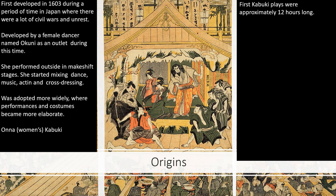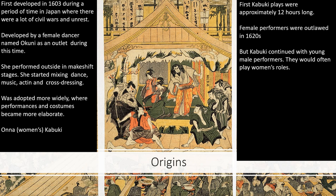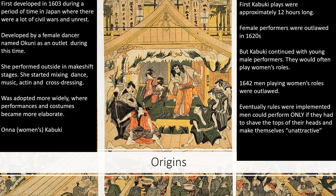Different from some of the theater forms we've been exploring, the first kabuki plays were about 12 hours long — not only as an art form but also as a form of escapism. The female performers were outlawed in the 1620s. It continued with young male performers, but eventually men playing women's roles was also outlawed in 1642. Rules were then implemented that men could only perform if they shaved the top of their heads and made themselves more unattractive — even the way they held their bodies, their facial expressions, and their costumes was to completely avoid looking attractive in any way.